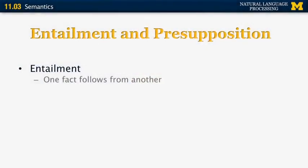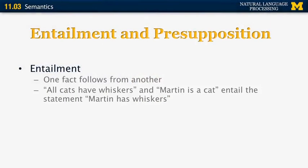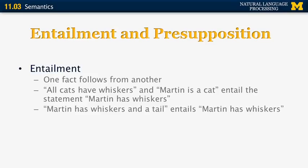Let's introduce two important concepts in semantics: entailment and presupposition. Entailment is when one fact follows from another. For example, if all cats have whiskers and Martin is a cat, then we can entail that Martin has whiskers. Another example: if Martin has whiskers and a tail, that entails that Martin has whiskers — we can drop 'a tail' and still have a valid statement.